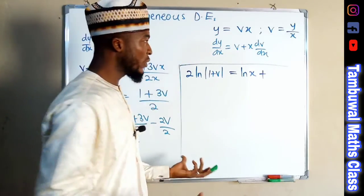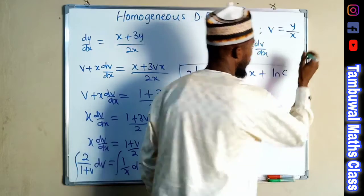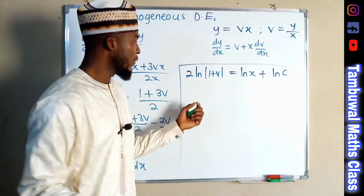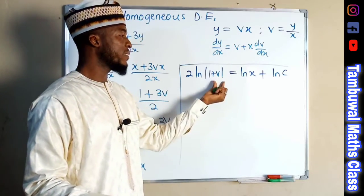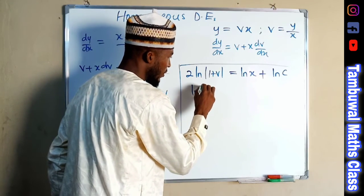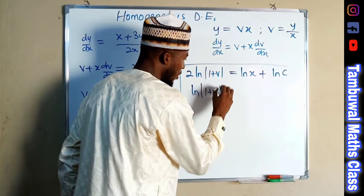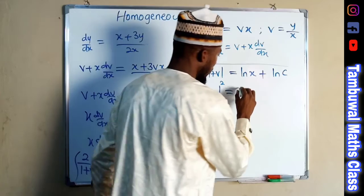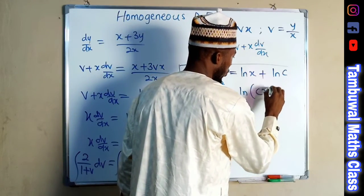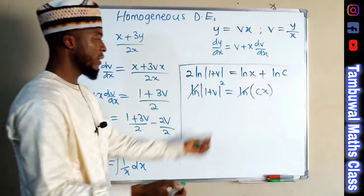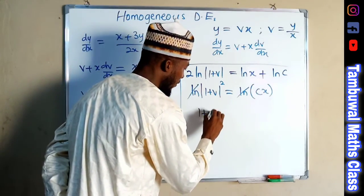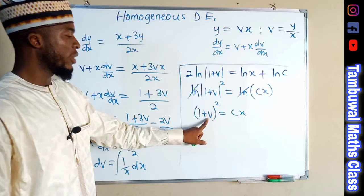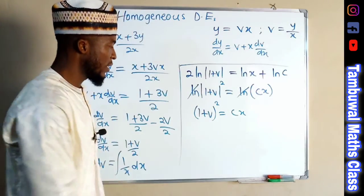We can write C in log form, since the log of a constant is still a constant. Using the law of logarithms, we bring the 2 as the power of (1 plus v), giving natural log of (1 plus v) squared. Combining the logs on the right gives natural log of cx. The logs cancel, leaving 1 plus v squared equals cx.